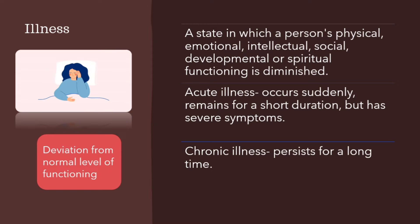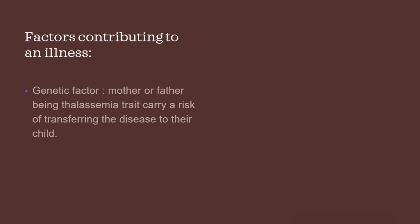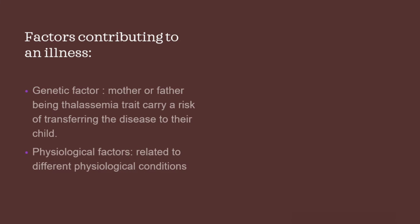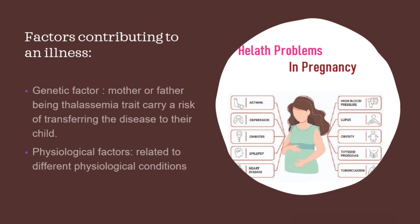Illness can be of two types: acute and chronic. Acute illness occurs suddenly, remains for a short duration, but has severe symptoms, whereas chronic illness once occurred persists for a long time. There are different risk factors contributing to an illness, like genetic and physiological factors. Genetic factor is a well-known cause behind a disease. For example, a mother or father being thalassemia trait carries a risk of transferring the disease to their child. Physiological factors are those related to different physiological conditions. For example, some pregnant mothers have the risk of suffering from gestational anemia, diabetes or hypertension.